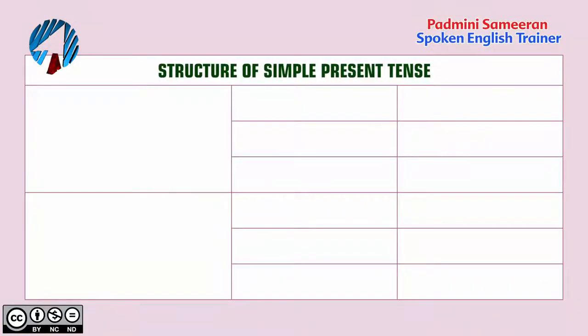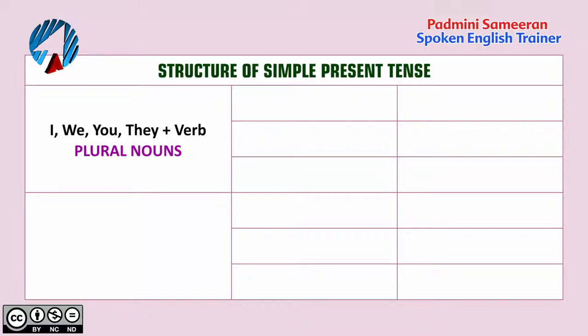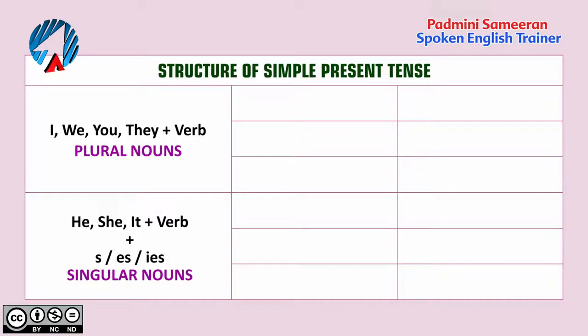The first thing I will be teaching you is about the structure of the simple present tense. It's a very simple structure. All you have to do is use the verb in the present form. With the subjects I, we, you, and they, and plural nouns, we just add the verb in the present form. With the subjects he, she, and it, and singular nouns, we use the present form of the verb with s, es, or ies — the s sound.